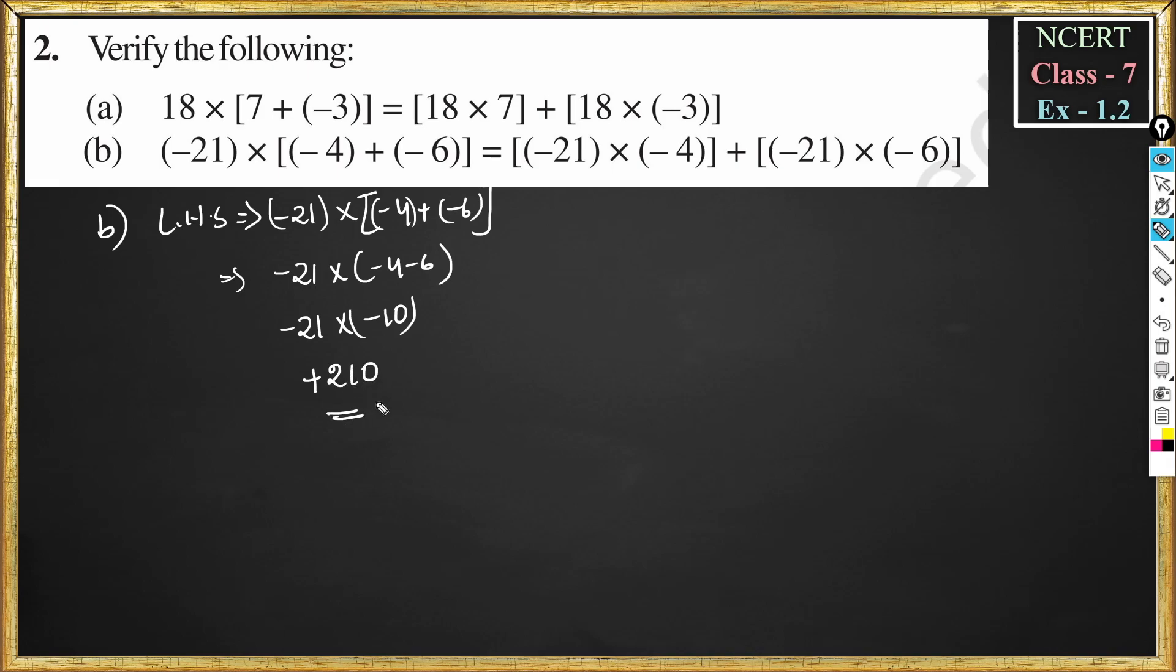So answer is plus 210. Similarly, we do RHS. RHS is minus 21 into minus 4 plus minus 21 into minus 6. So here minus into minus is plus. 4 ones are 4, 4 twos are 8. This becomes 84 plus minus into minus is plus. 21 into 6 is 126.